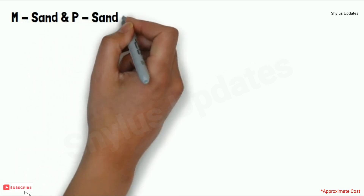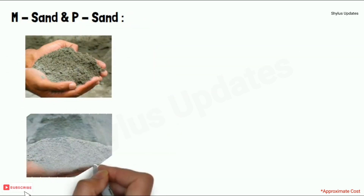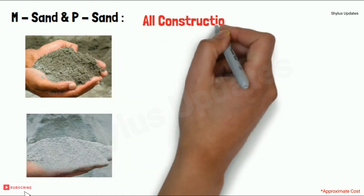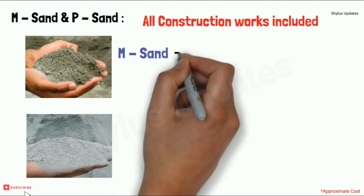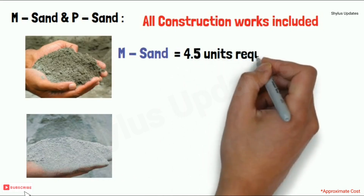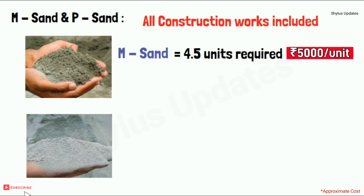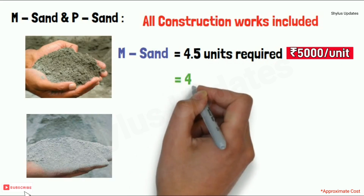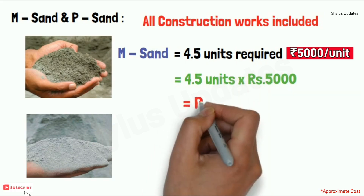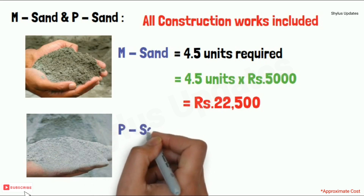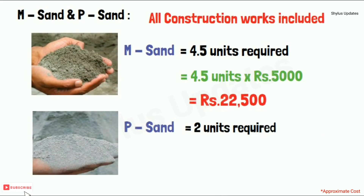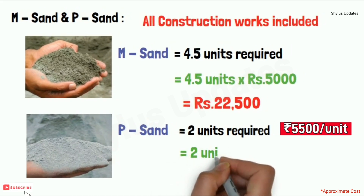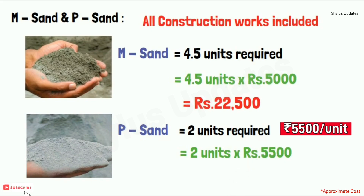M-Sand and P-Sand are used in all construction works. For a 250 square feet house, 4.5 units of M-Sand are required. The current market rate of M-Sand is rupees 5,000 per unit, giving rupees 22,500. For P-Sand, 2 units are required at rupees 5,500 per unit, giving rupees 11,000.